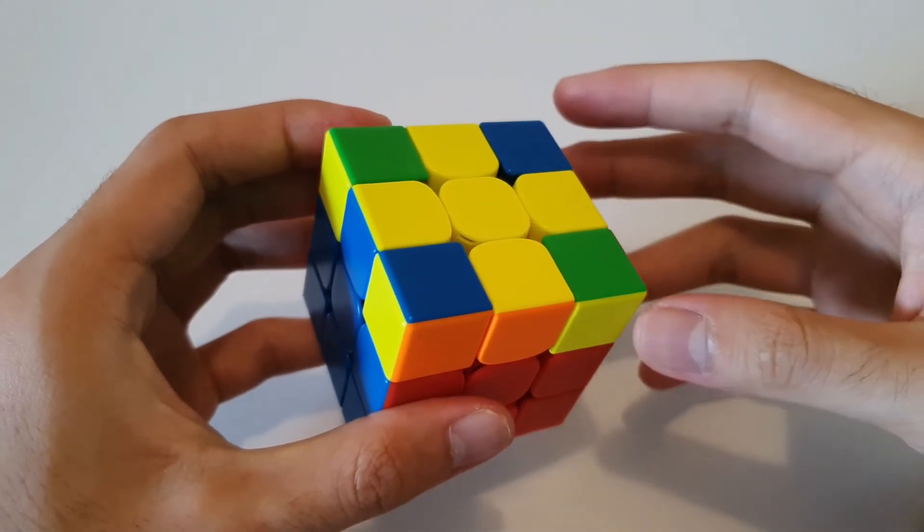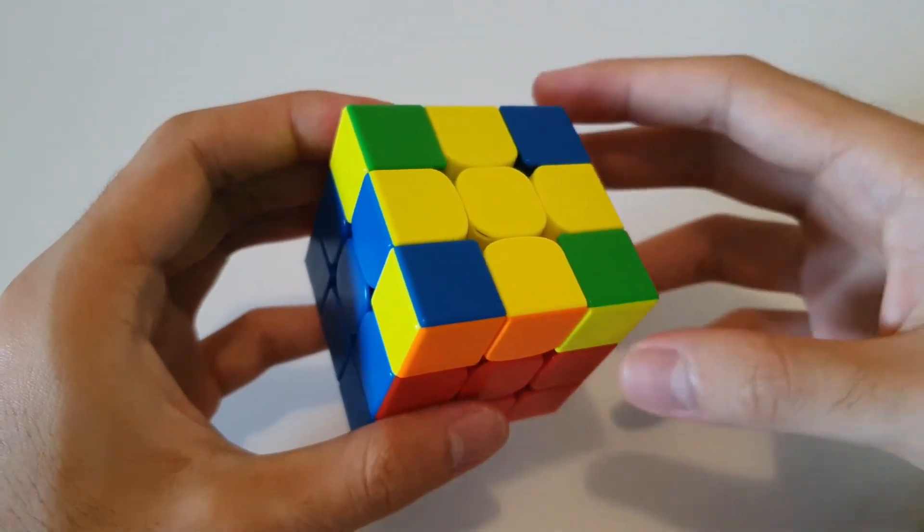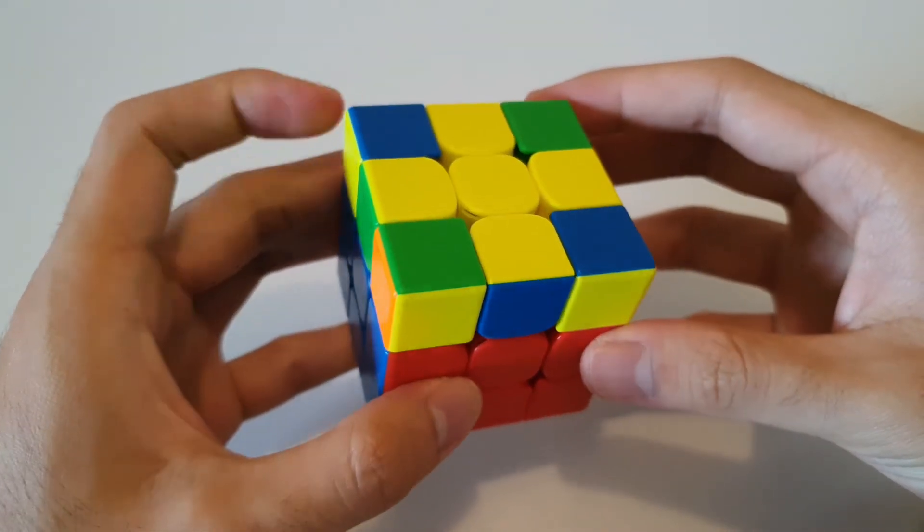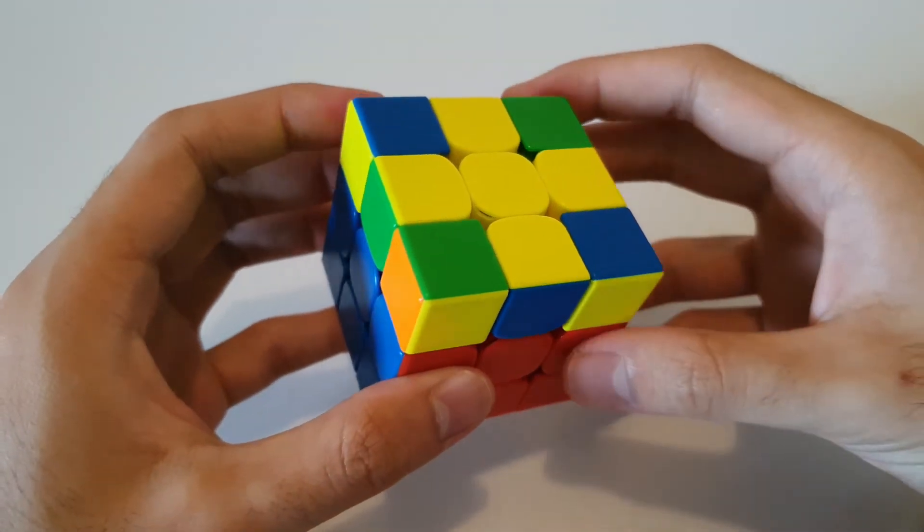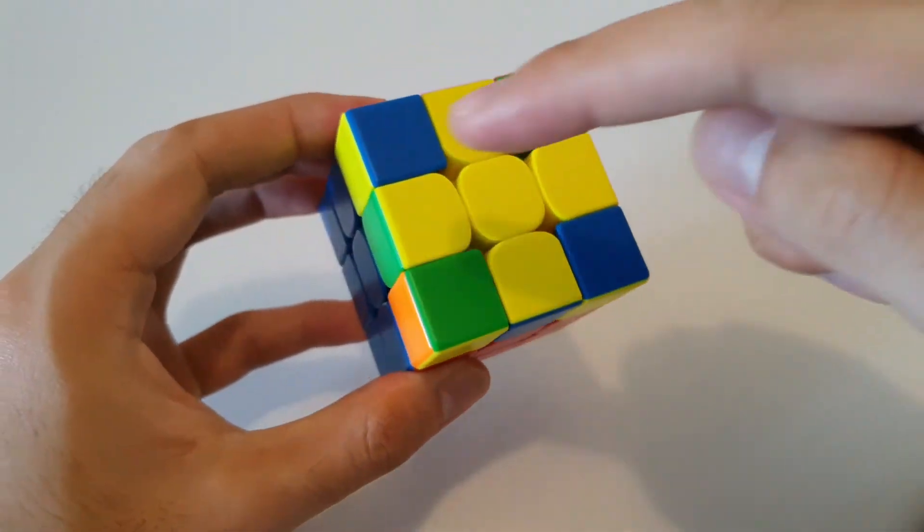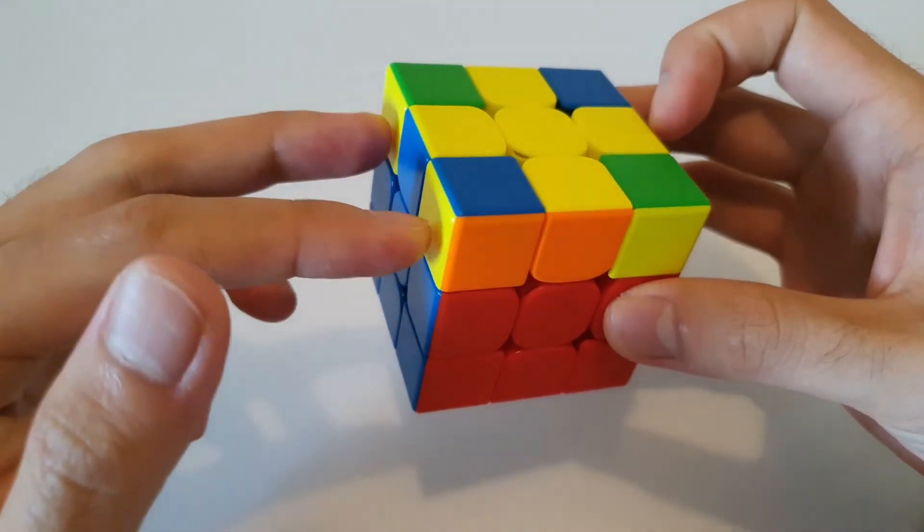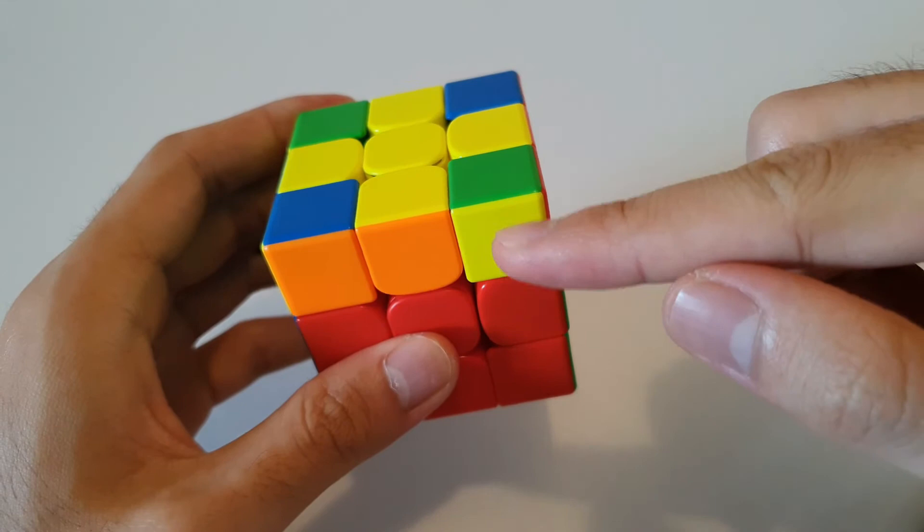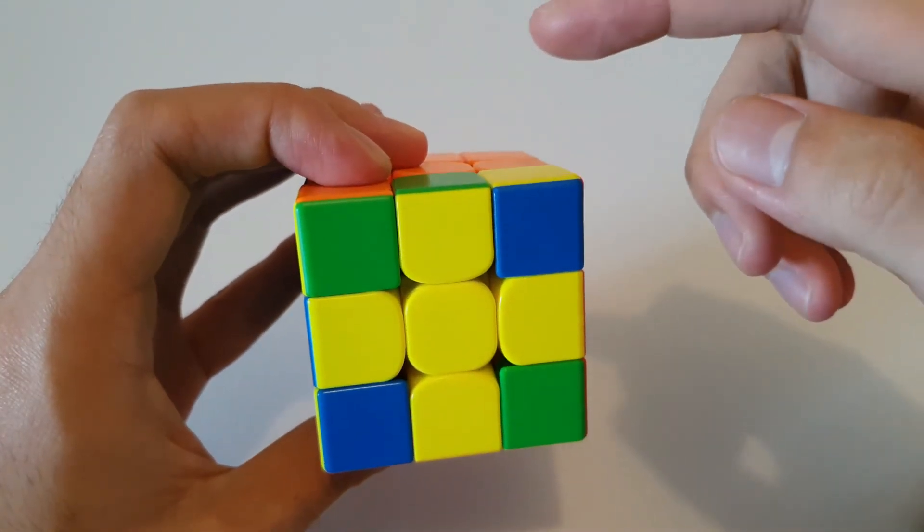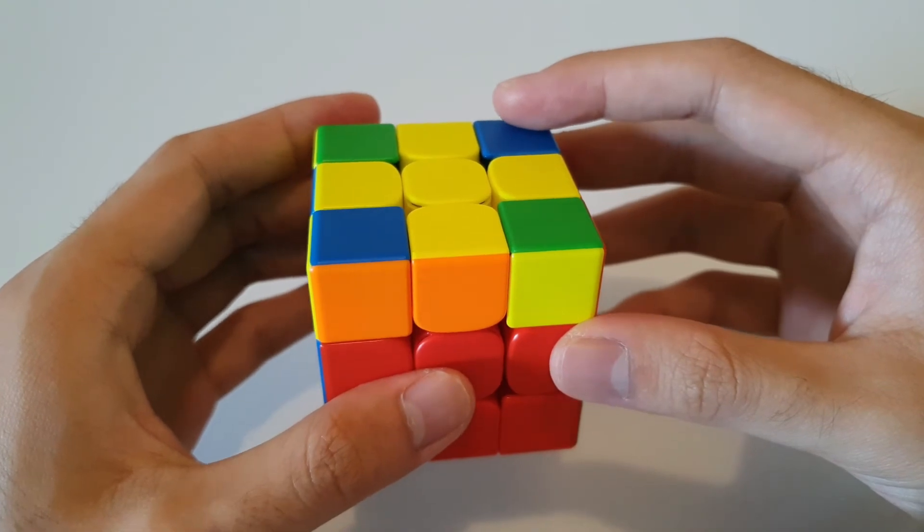Finally, moving on to the cases where we have zero corners oriented. So the first case you can get is this case here, and it's called the Pi case, because once again, if we extend the yellow corner stickers outwards, it kind of forms this pie shape. So for this Pi case, we want to hold it so that the headlights are on the left side, and we have yellows on the right side facing front and back. From this angle, the algorithm goes like this.